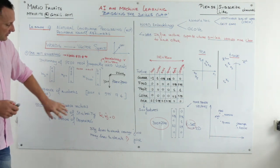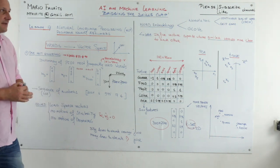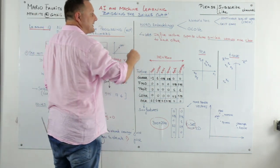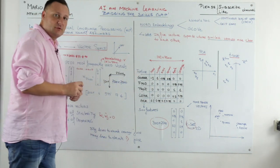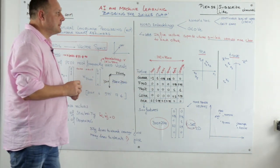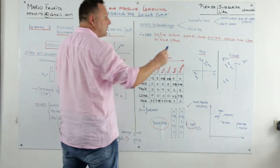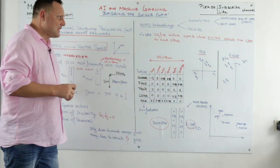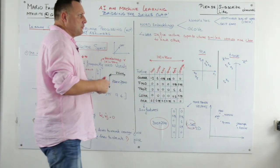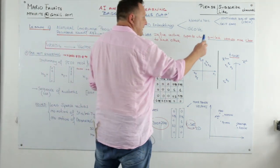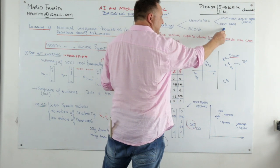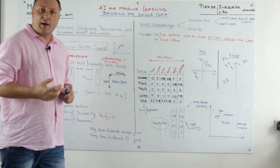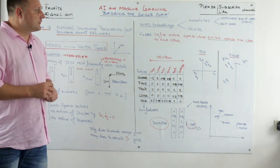In order to solve all this, there are word embeddings. We'll look at word embeddings, word2vec, and GloVe. In word2vec there are two types: continuous bag of words and skip-gram.